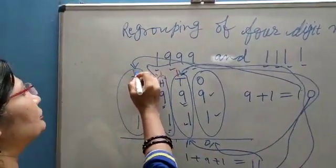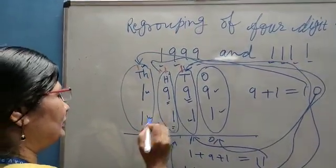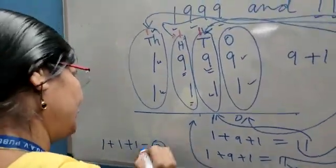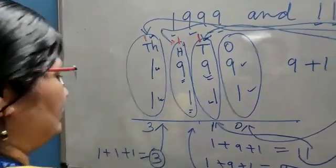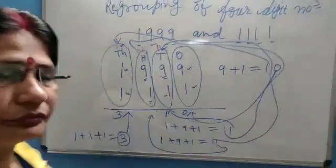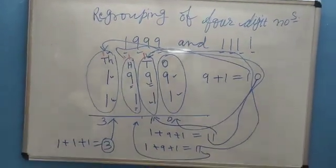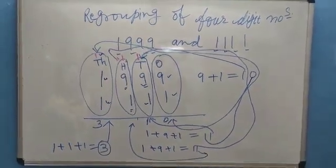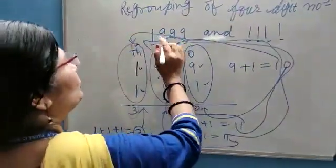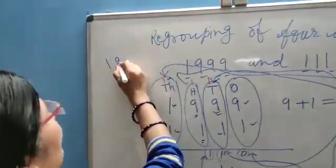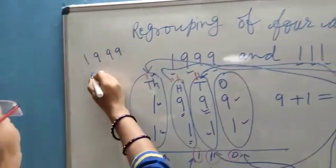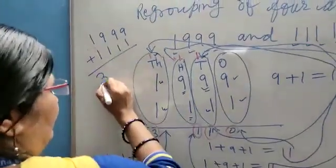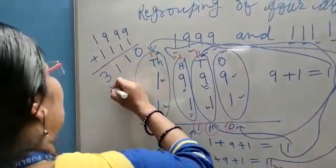Now the sum of 1 plus 1 plus 1 is equal to 3, and 3 will be placed at thousands place. So the sum of 1,999 and 1,111 is equal to 3,110.